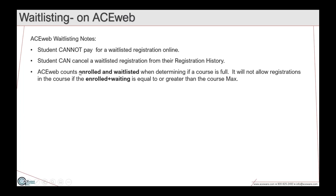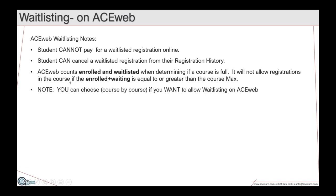On AceWeb, students cannot pay for a waitlisted registration online, but they can cancel a waitlisted registration from their registration history. AceWeb counts both enrolled and waitlisted people when determining if a course is full, which is intentional — if someone cancels from the enrolled group, you should contact your waitlist first before letting someone off the street take that spot.